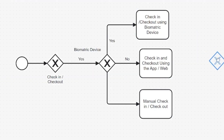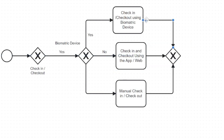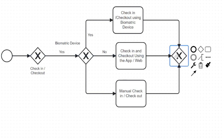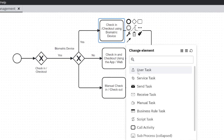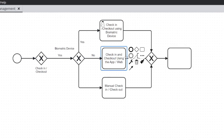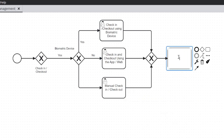Data will come into the system from all these sources. Check-in might be at eight o'clock and check-out at five o'clock, or check-in at nine and check-out at four. To validate this, shift types must be defined in the system. The validation process will be done by the system through a script task — the script will validate check-in and check-out.